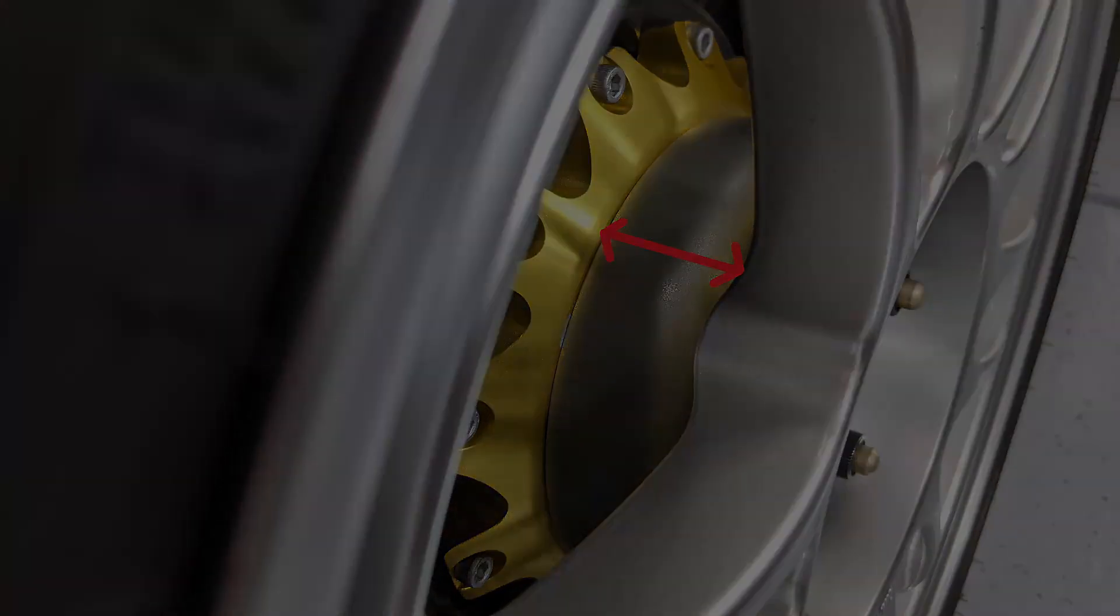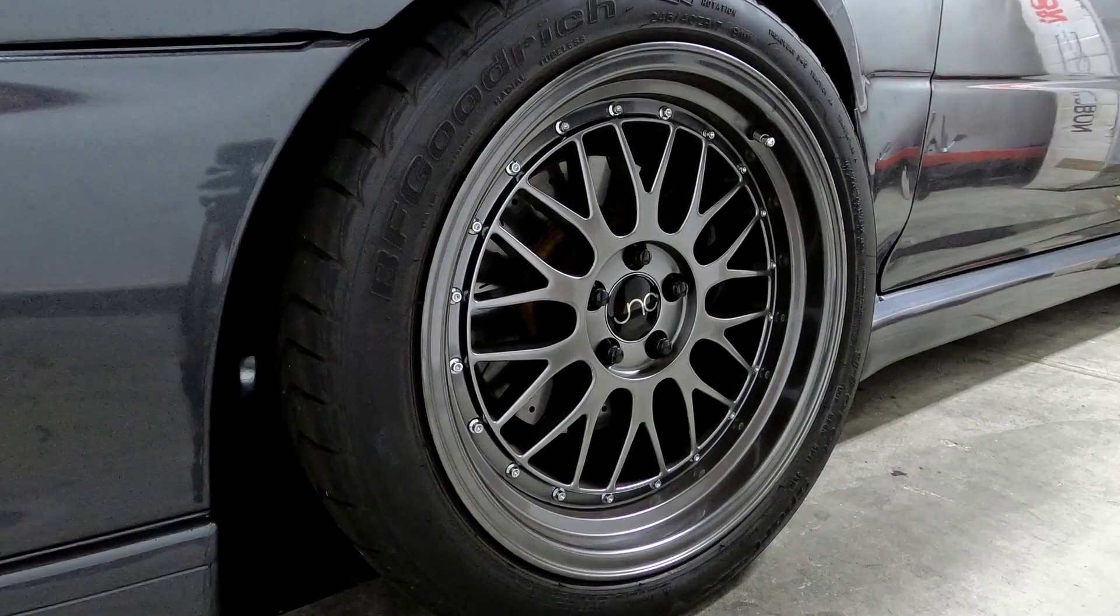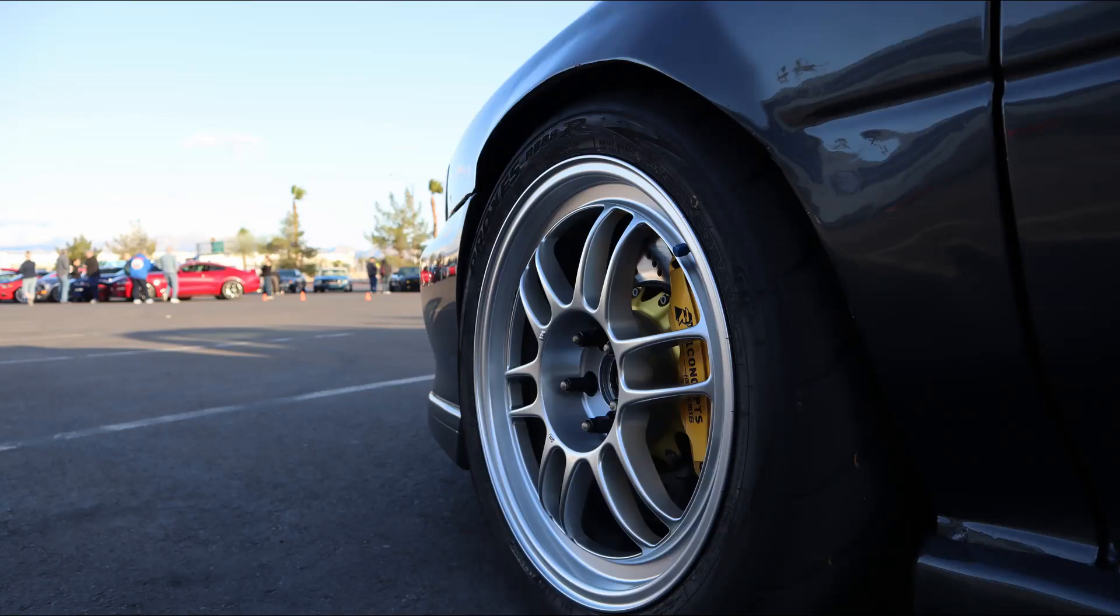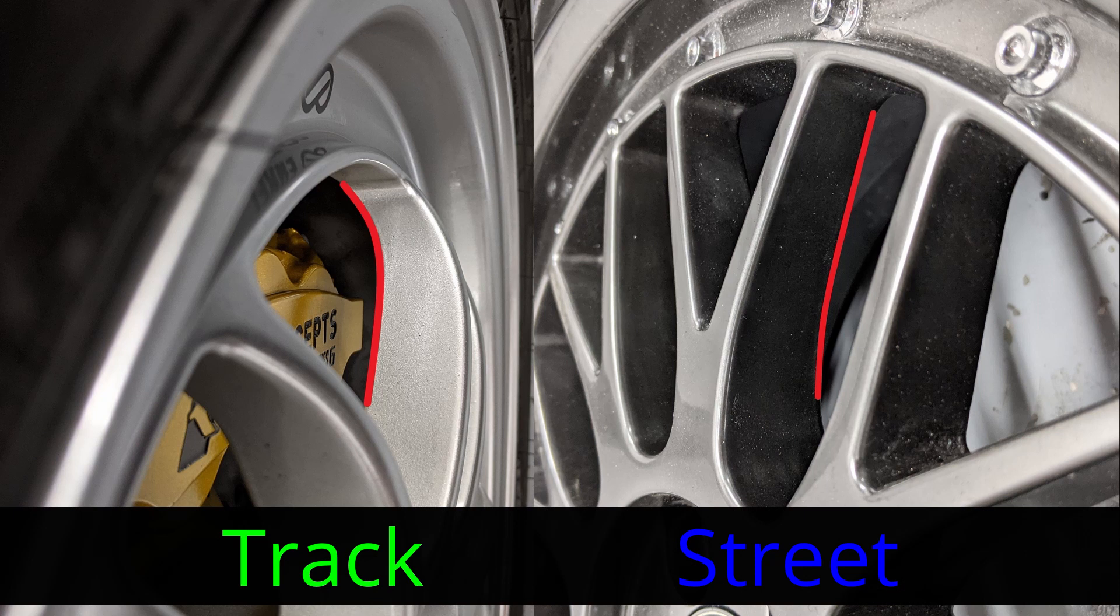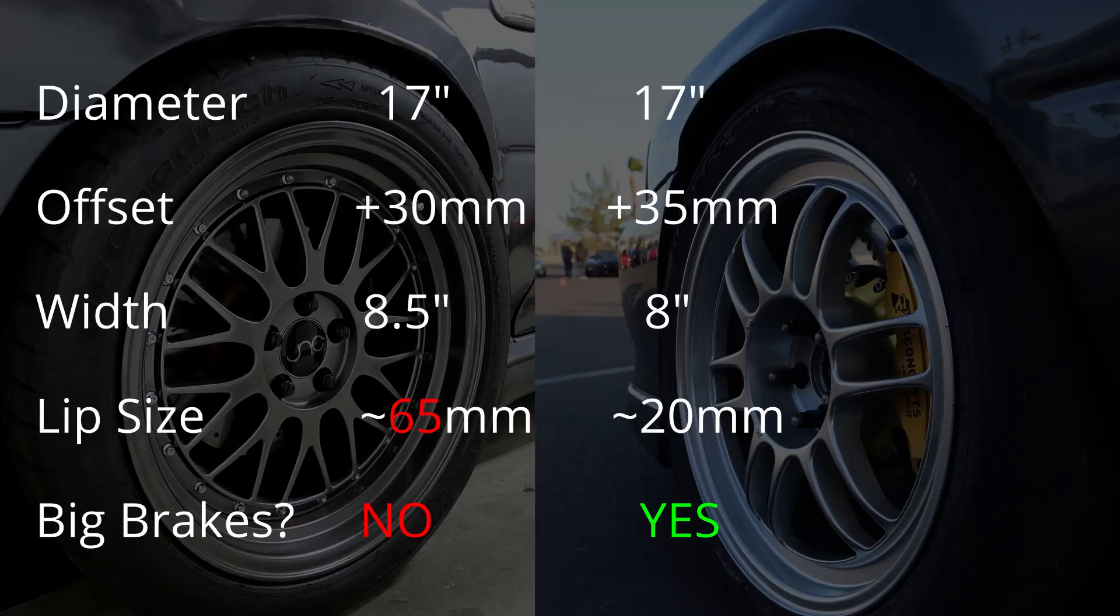Clearing big brakes or having deep dish wheels is determined by the wheel diameter, the face design, and offset. For example, these are my street wheels. Notice the lip or dish and how flat the faces of the design. These are my track wheels. Look at the curvature of the spokes. My street wheels have an offset of plus 30 and my track wheels have an offset of plus 35.